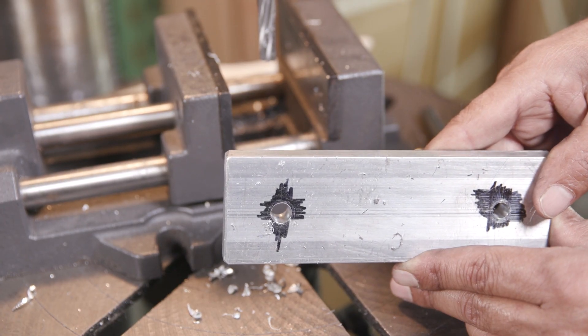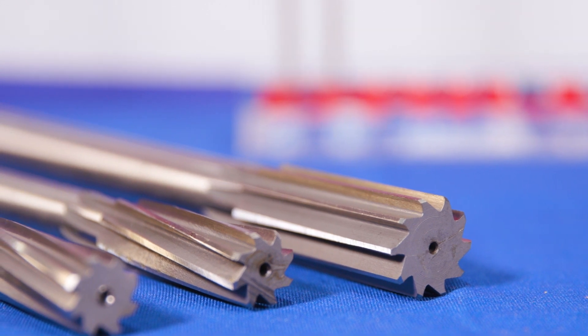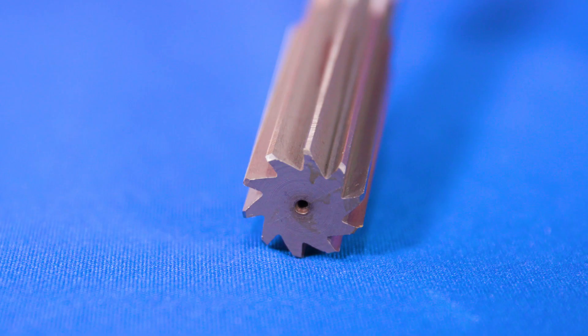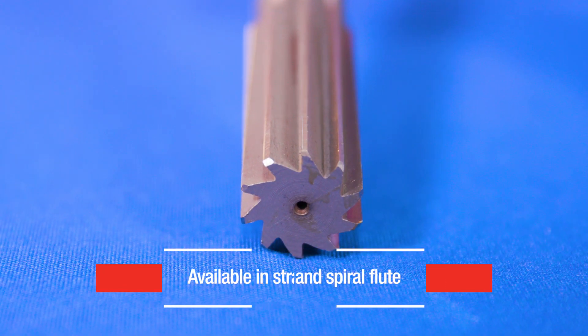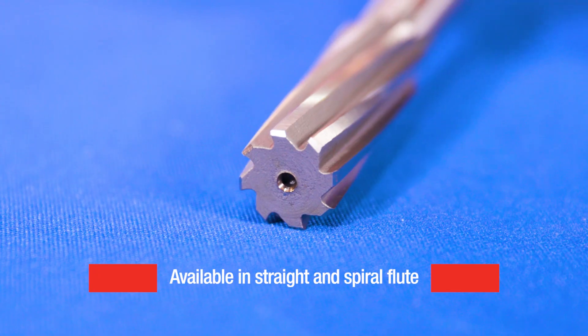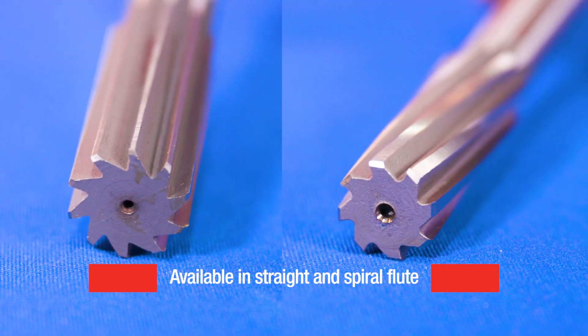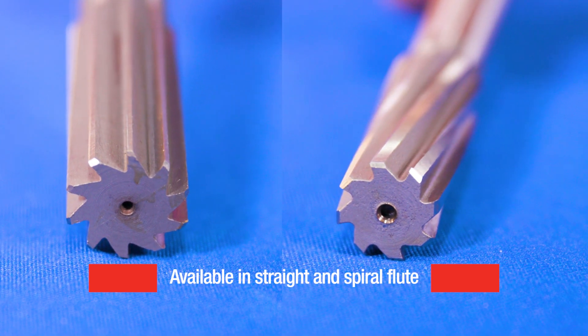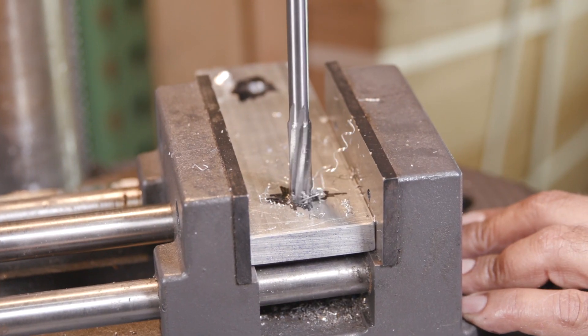Chucking Reamers are regularly pointed with a 45-degree chamfer and available in straight and spiral flute. Straight flute is recommended for general purpose reaming, while spiral flute is designed for more difficult materials, better surface requirements, and applications with an interruption such as keyway or crosshole.